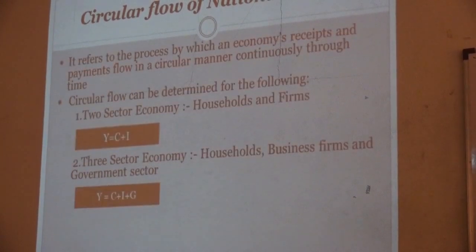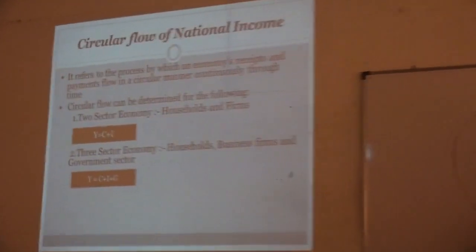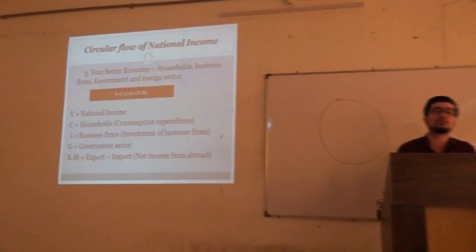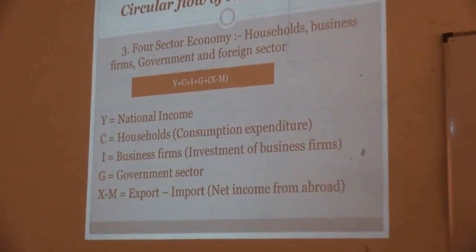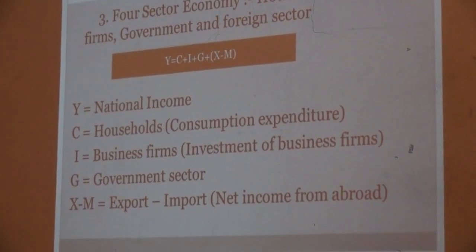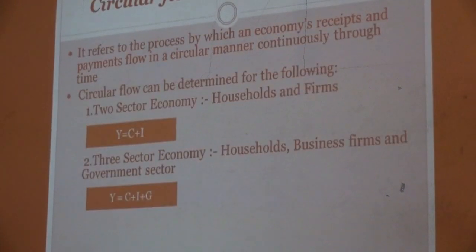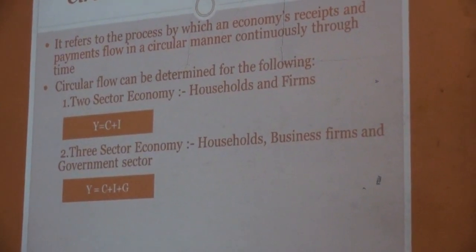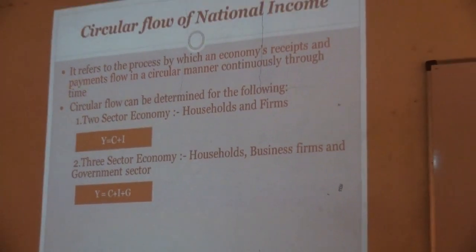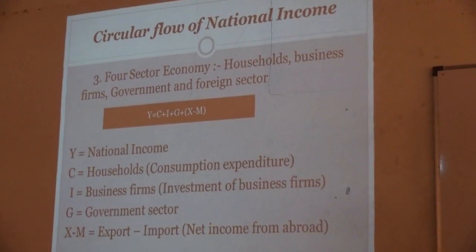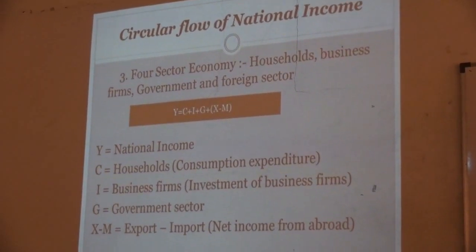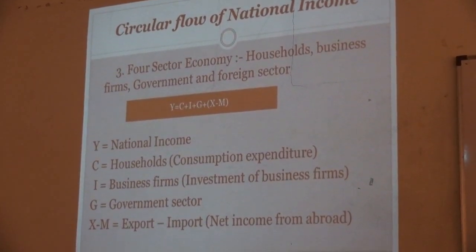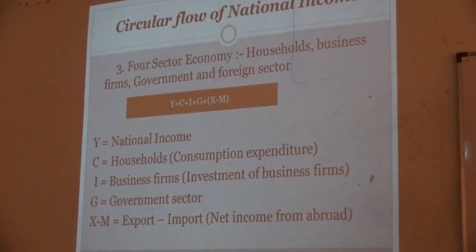There are formulas for each type of economy. In the two-sector economy: Y = C + I, where Y is income, C is household consumption expenditure, and I is investment by business firms. In the three-sector economy: Y = C + I + G, where G represents the government sector. In the four-sector economy: Y = C + I + G + (X − M), where X − M represents net exports — export minus import, or net income from abroad.